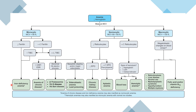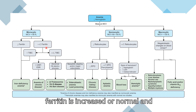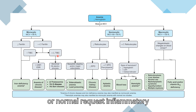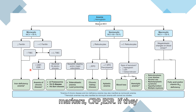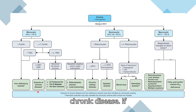If microcytic anemia is present and ferritin is increased or normal and total iron binding capacity is decreased or normal, request inflammatory markers — CRP and ESR. If they are increased, the diagnosis is anemia of chronic disease.